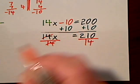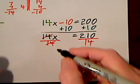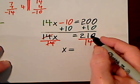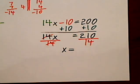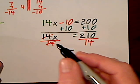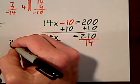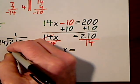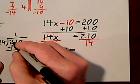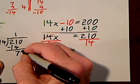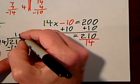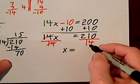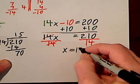14 goes into 14 once, so you have 1x on the left. And then 14 into 210. It goes, let's just be careful here. I'll do my long division. 14 goes in there once, 7 left over. Bring down your 0. 14 goes into 70 five times. That would be 70. So 210 over 14 reduces to 15.